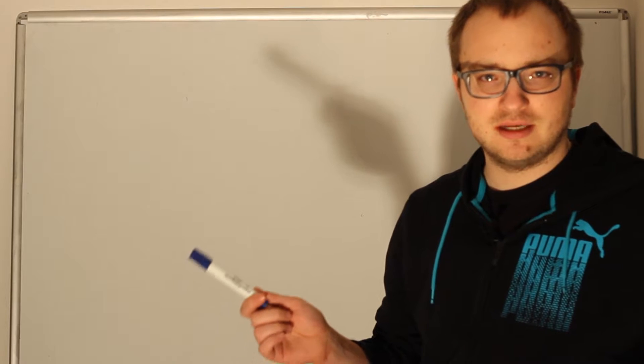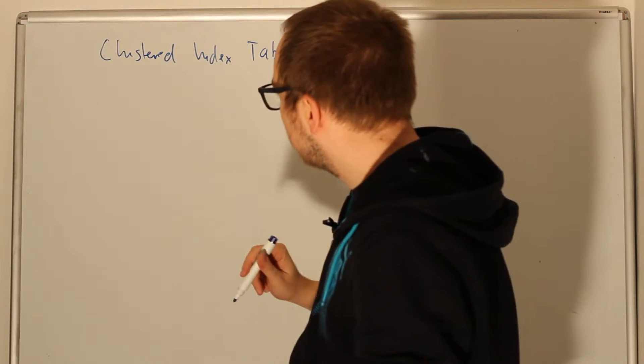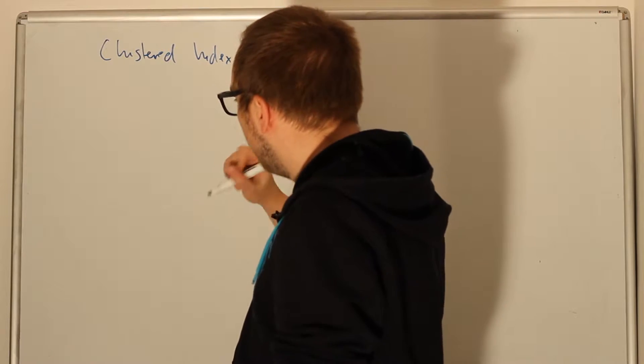We'll start with the most common type of table, the clustered table. We want to focus real quick—I'll try to make it as quick as possible—on the main structure of the table. So what is actually a clustered key? What is a B-tree?